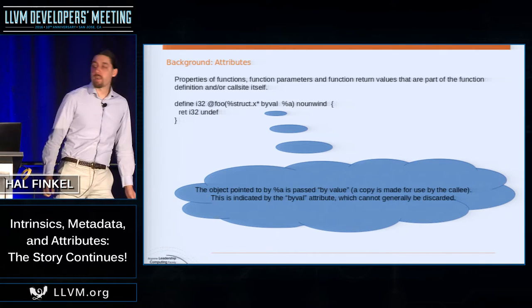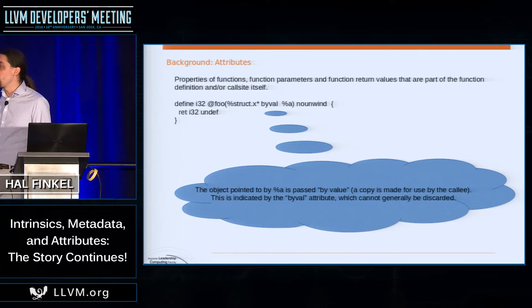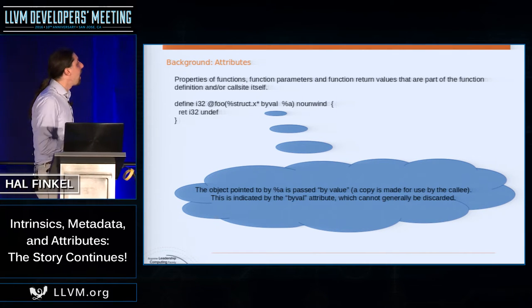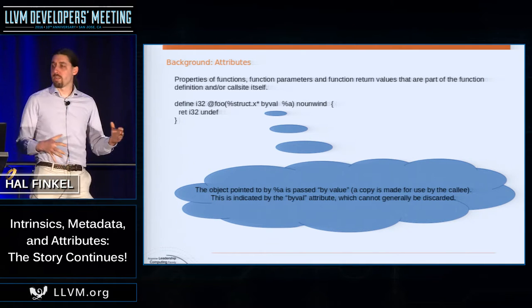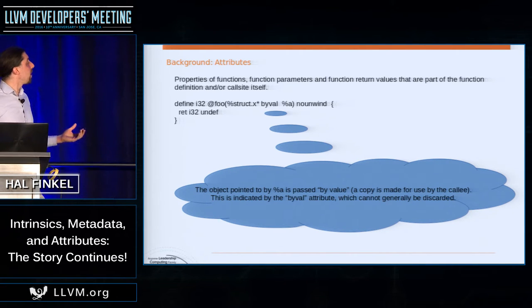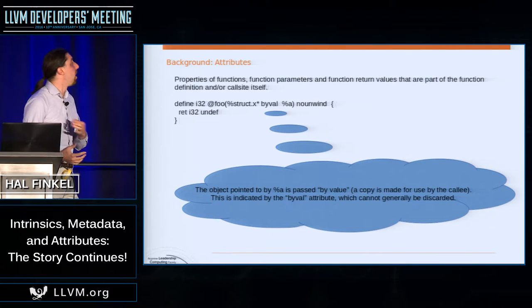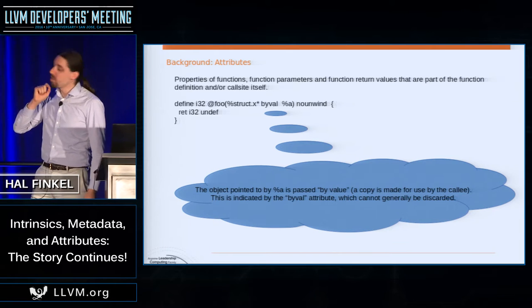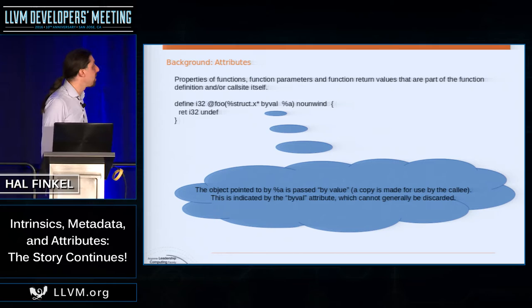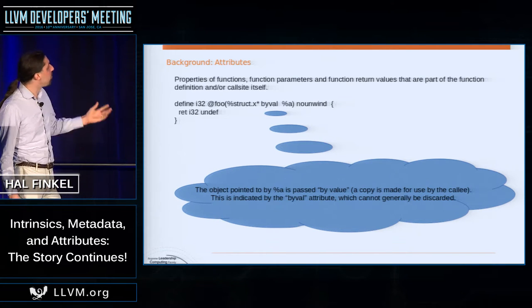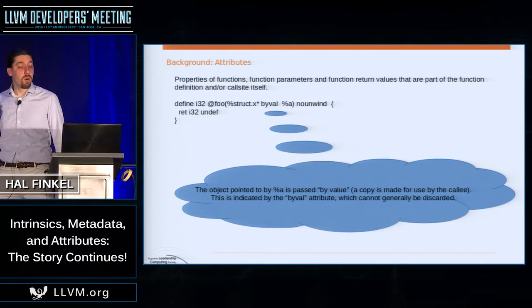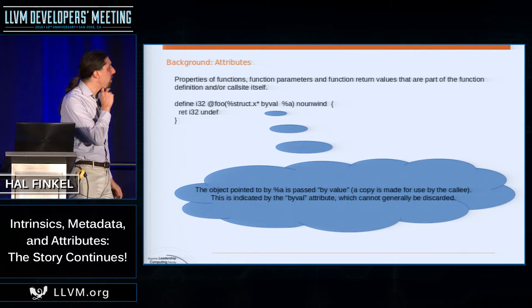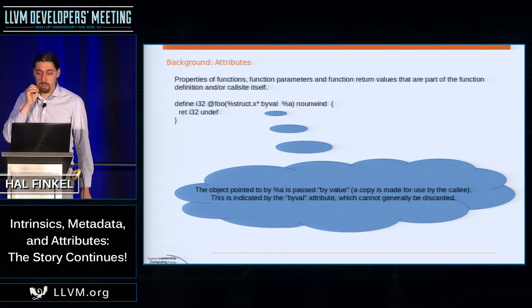Attributes are things that go along with functions. They can go along with the functions themselves or with specific function arguments. There are two kinds: built-in attributes, which are part of LLVM's grammar — for example, a function 'foo' with attribute 'nounwind', or an argument 'a' with attribute 'byval' saying the function takes that argument by value. These are properties understood natively by the compiler. You can also have attributes on functions that are arbitrary strings.